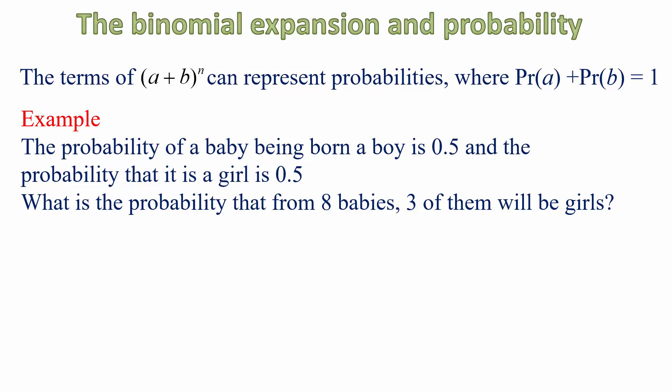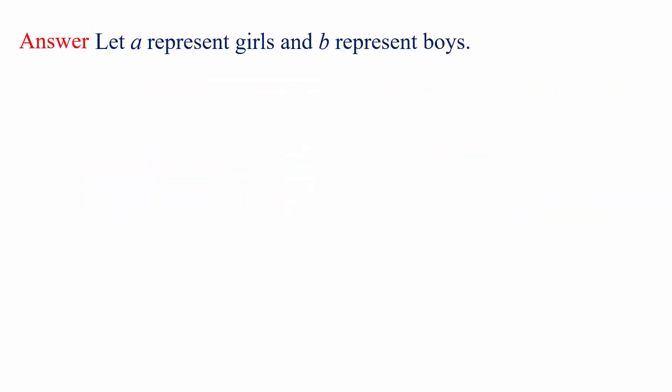Let's suppose in a hospital, eight babies are about to be born. What's the chance or probability that three of them will be girls? Let's start by representing the letter A to mean girls and the letter B to mean boys. Now, we know the probability of each. Probability of a girl is 0.5. Probability of a boy is 0.5 also. We have a group of eight babies, so N will be 8. So substituting that into our formula, we get the expression you can see there.